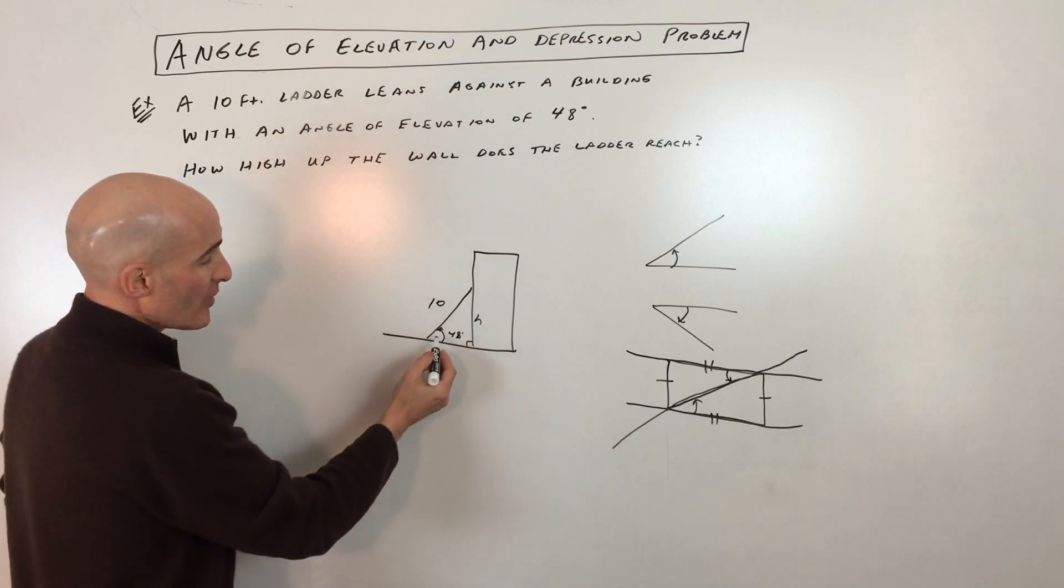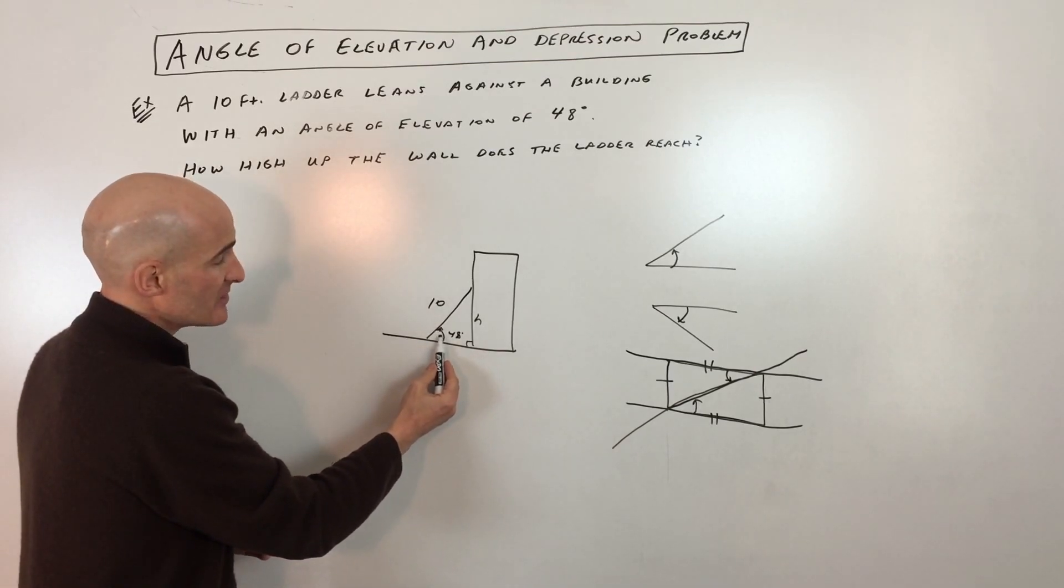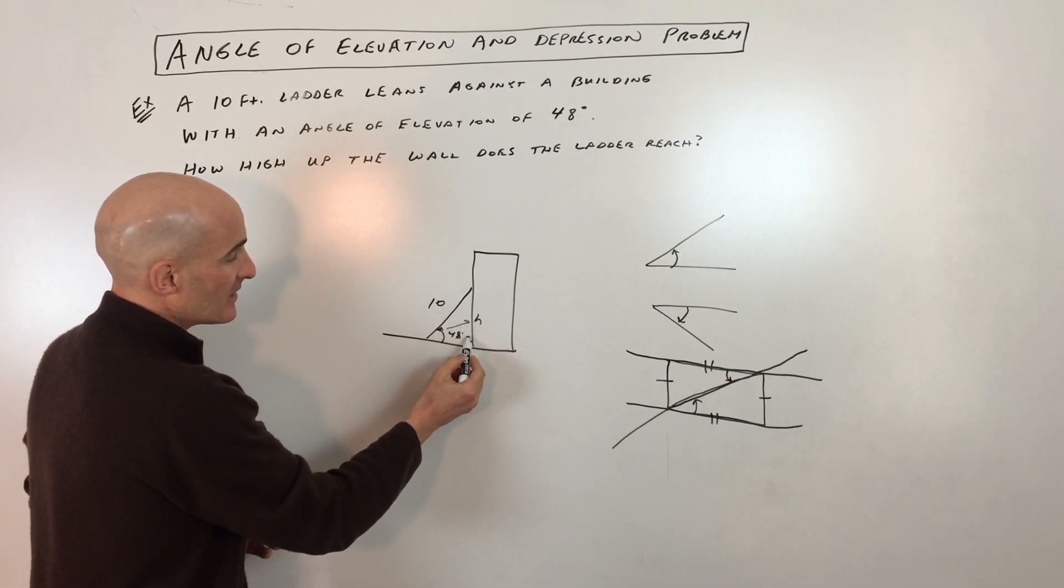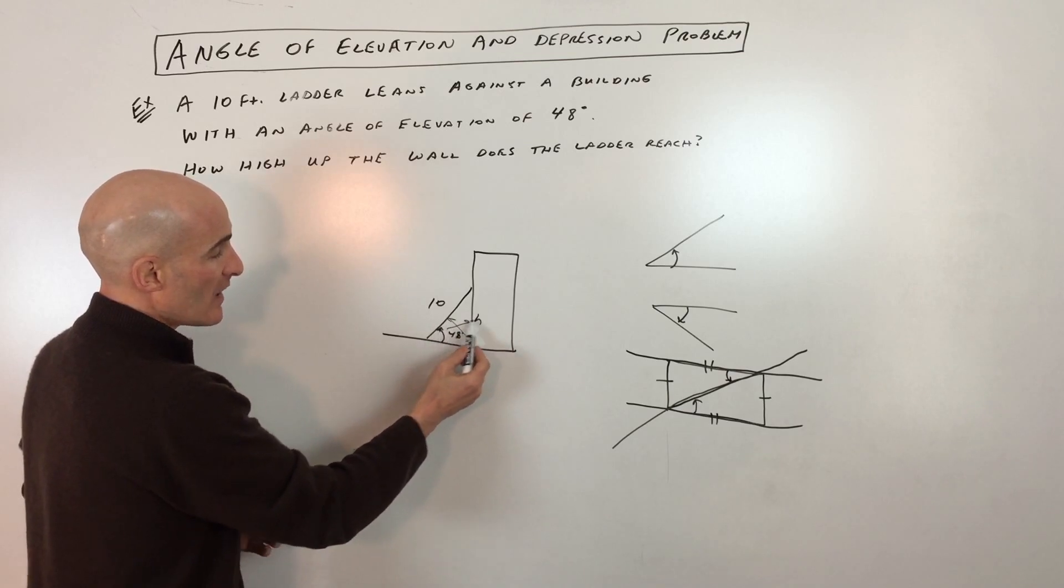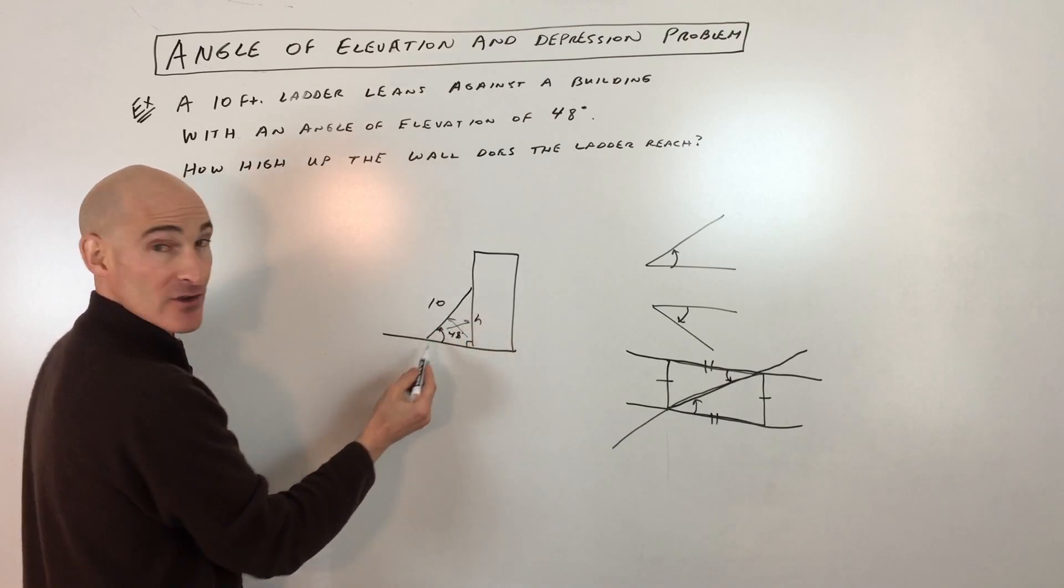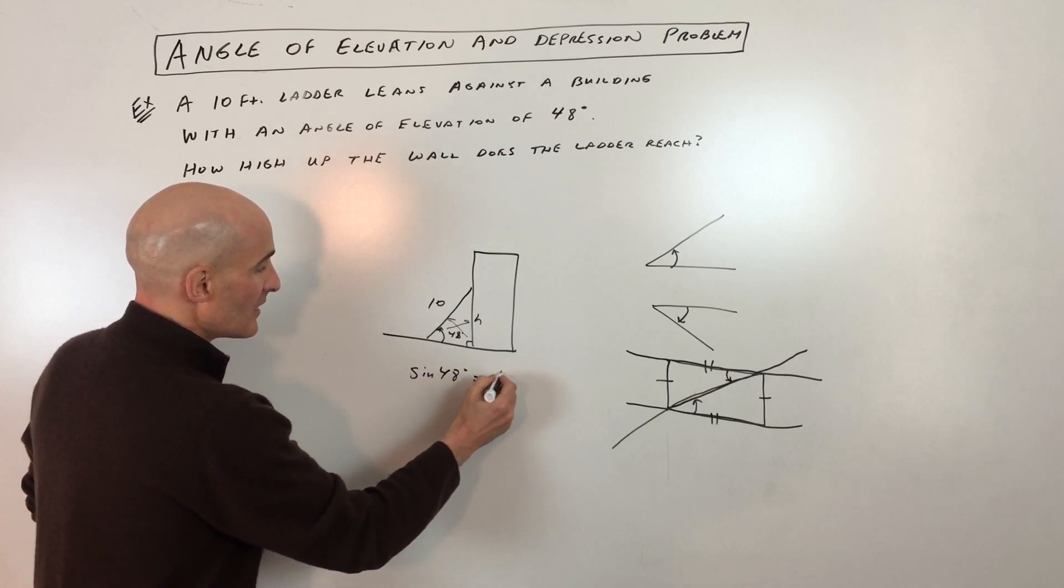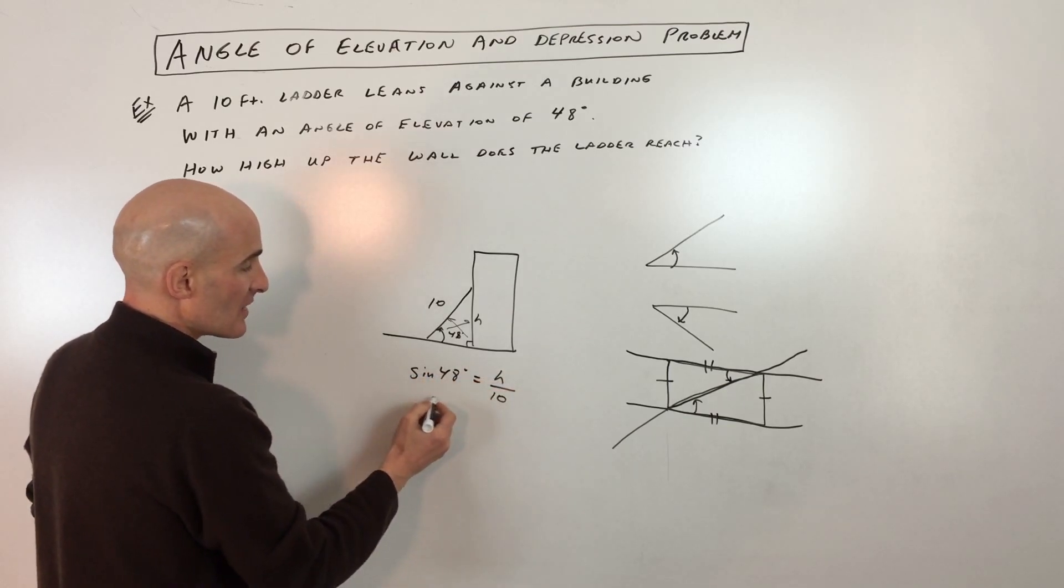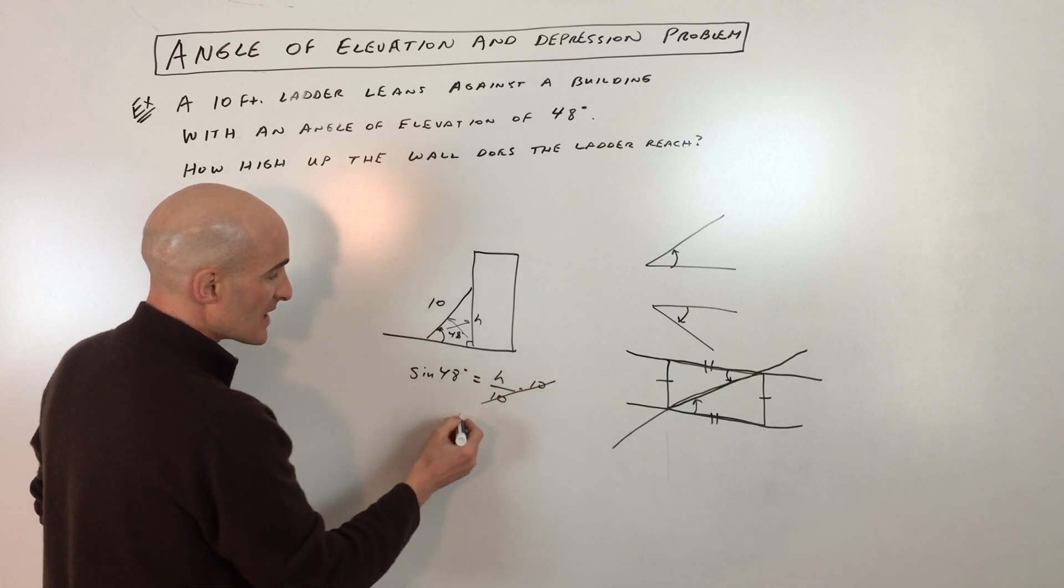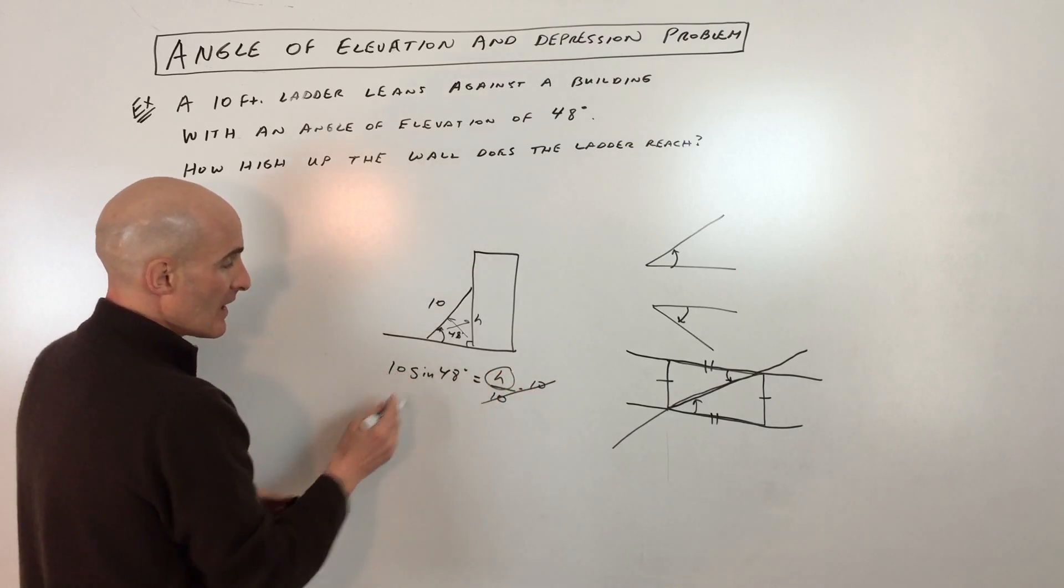So what you want to do is you want to figure out what trig function ties together this angle, this side, and this side. Well, you can see we have opposite and hypotenuse. That's the sine. So we've got sine of 48 degrees equals opposite over hypotenuse. And then what we can do is multiply both sides by 10 to get H by itself.